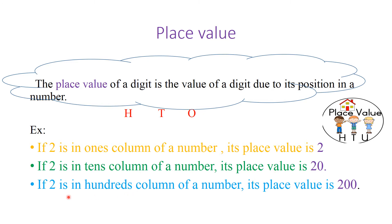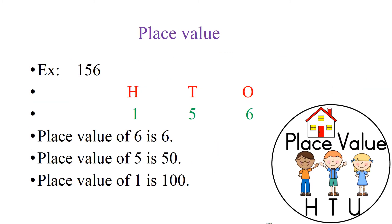If 2 is in the 10's place, its place value is 2 tens, that is 20. If 2 is in the 100's place, its place value will be 200. The place value of a digit is the value of a digit due to its position in the given number. Now let us see one example based on place value. We are going to take the number 156.